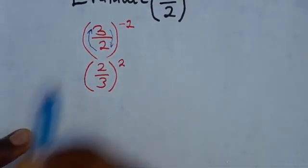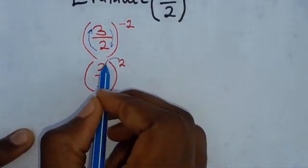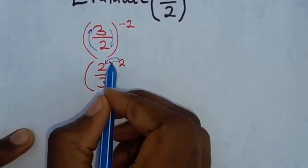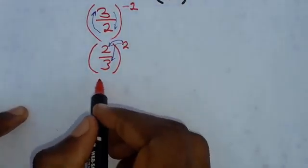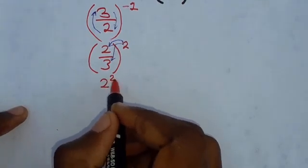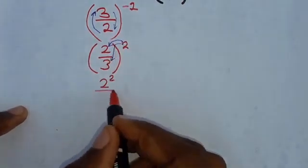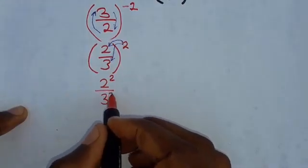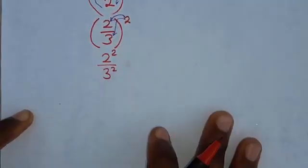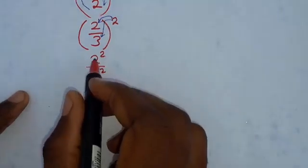It's important that you know this power is for everything that is in the brackets. This means you are going to have 2 to the power 2, we are distributing, then over 3 to the power 2.